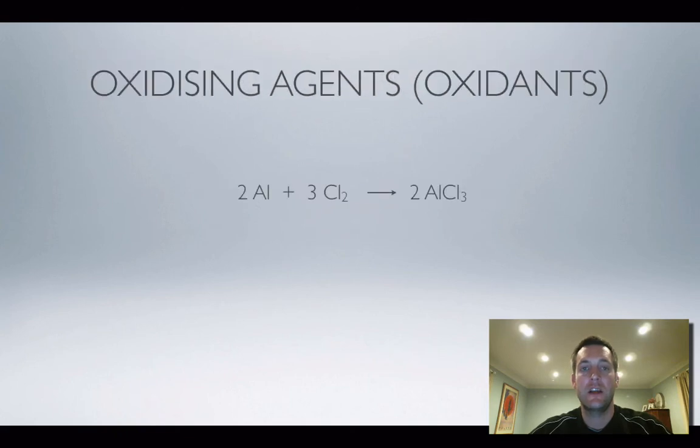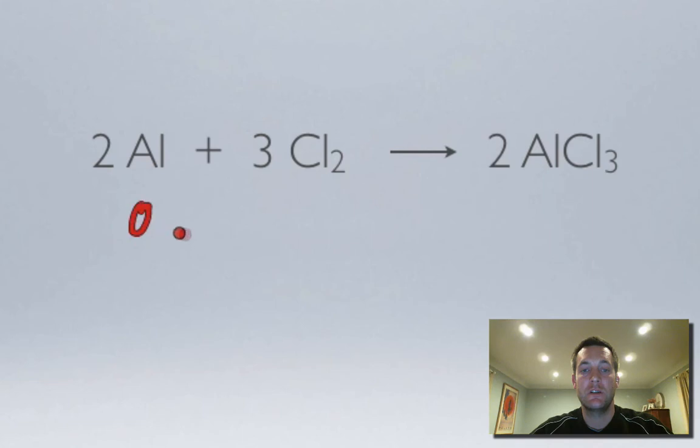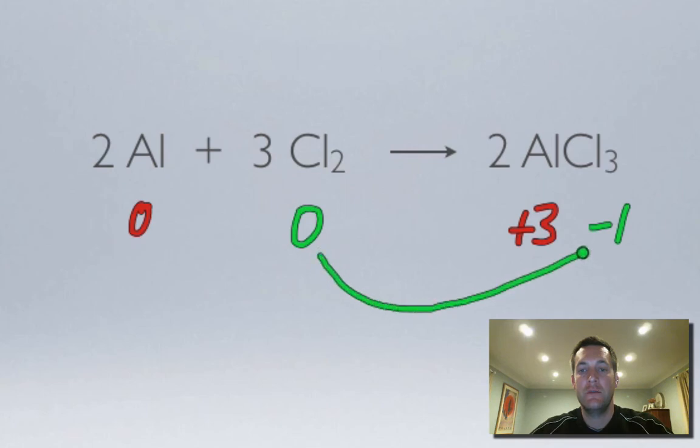Now, let's look at the kind of other side of that coin, I suppose, to look at oxidising agents. Now, here we've got aluminium reacting with chlorine, starting off with two elements. So their oxidation numbers are going to be zero. Here we've got an ionic compound. So it's a bit easier to see what the oxidation numbers are here, because aluminium forms a three plus ion. So the oxidation number is plus three. Three chlorines attached to it, or three chloride ions attached to it, the whole thing is going to have to add up to zero. So each chloride ion is going to have a minus one oxidation number. So the chlorine has gone down. The aluminium has gone up. So the aluminium got oxidised.